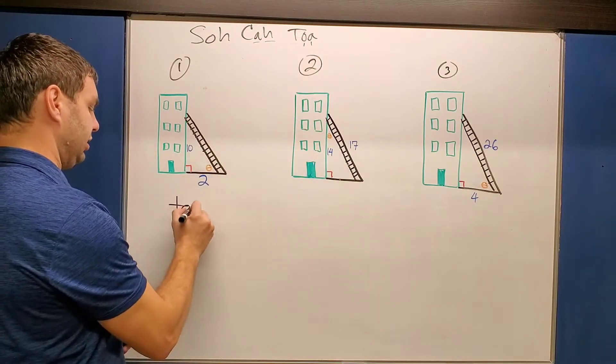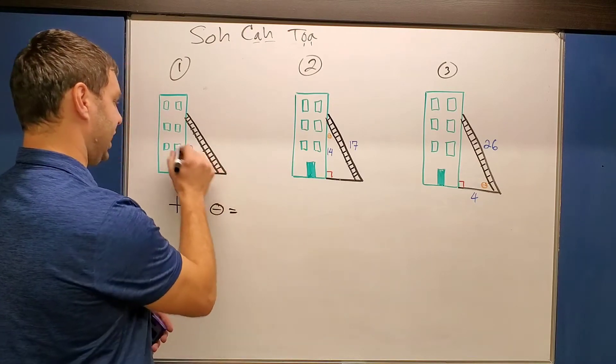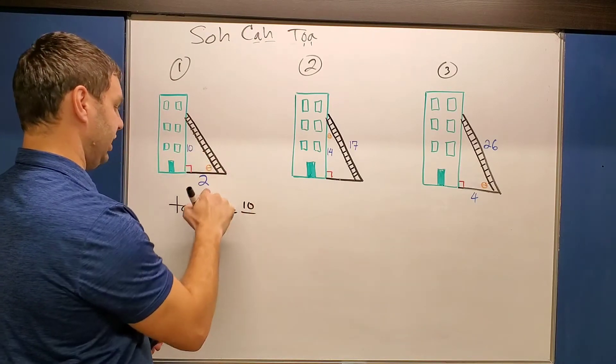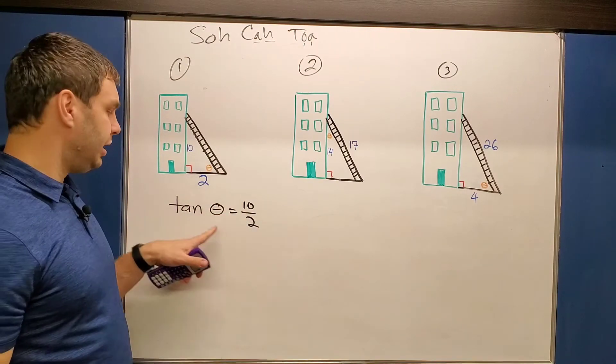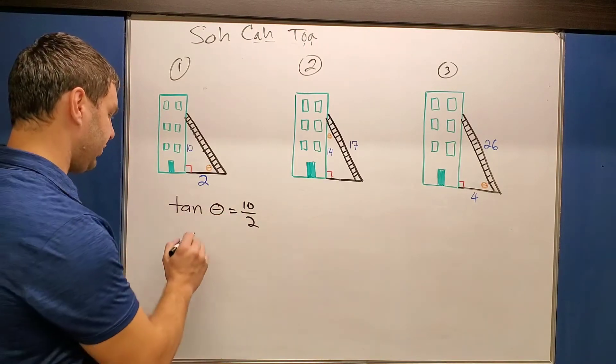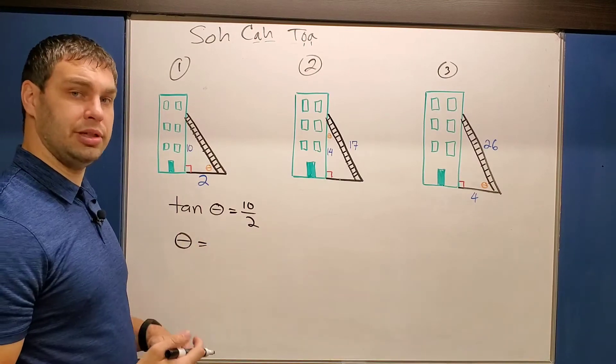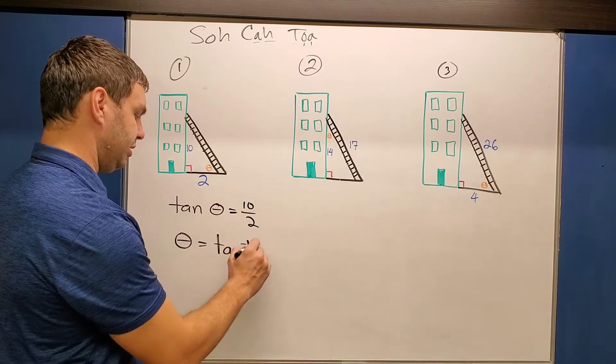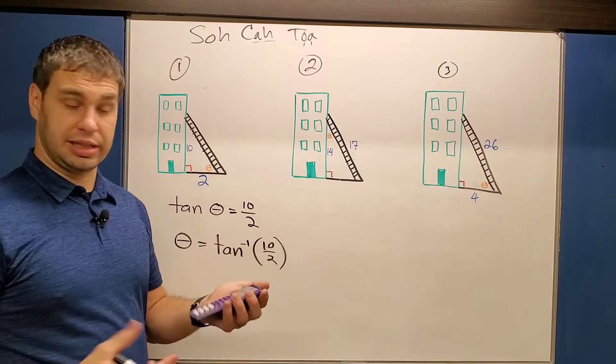So we're going to say tangent of our angle, call it theta, again you can call yours X or whatever, equals the opposite 10 over the adjacent 2. And you can simplify that if you want it to be 5, but in order to find theta, we actually have to take, we're going to say theta equals the inverse of whatever trig function we're using. So the inverse tangent of 10 over 2. And you can type it in the calculator just like it looks.